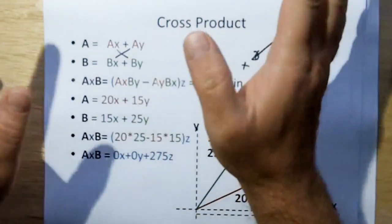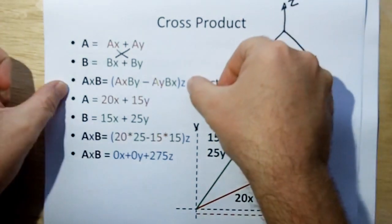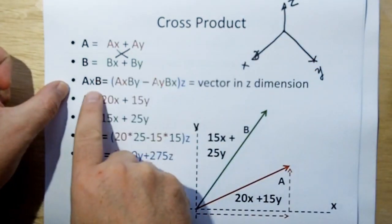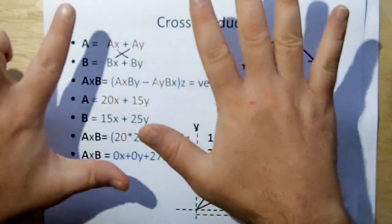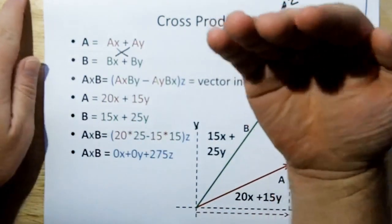And so what you have here, unlike the dot product, you don't have a scalar, you now have a vector that's normal to A and B. In this case, because these vectors are in the X, Y plane, that normal ends up being in the Z plane.